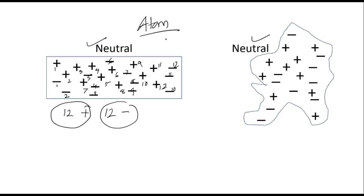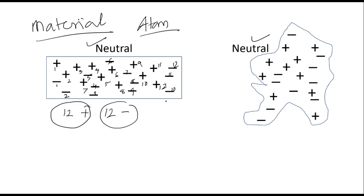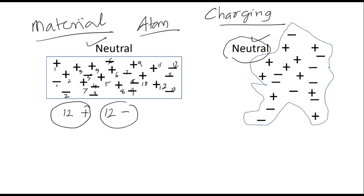Just to have a situation here to understand what is this charging phenomenon — what we call charging. We have created a situation here. Now go for this second object. It is also neutral. Let us check: 10 protons, that means 10 positive. And 10 electrons, that means 10 minus. So 10 minus are there, and again it is neutral.